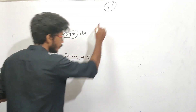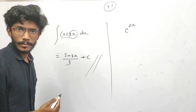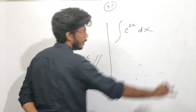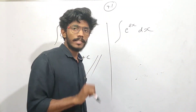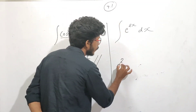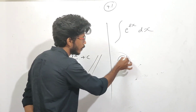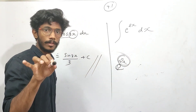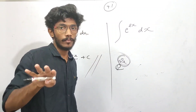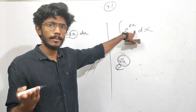e raised to 2x is equal to the integral. Integral of e raised to 2x dx. How do I do this? This is my function — it is an exponential function. 2x is an algebraic function. The outer function is exponential; e is the outer function. The inner function is 2x.